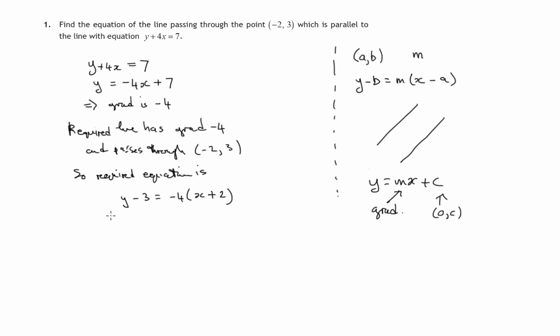And a little bit of tidying up is required. Get rid of the brackets, negative 4x, and negative 4 times positive 2 is negative 8. So, let's add 3 to both sides, y equals negative 4x, and 3 added on to negative 8 is negative 5.